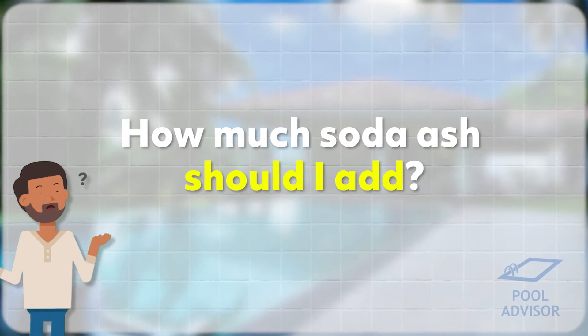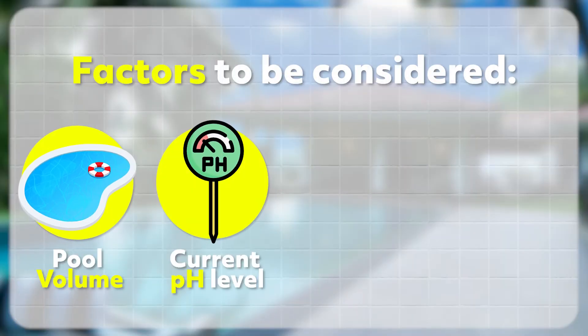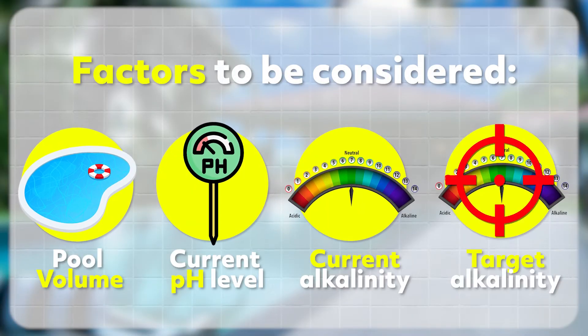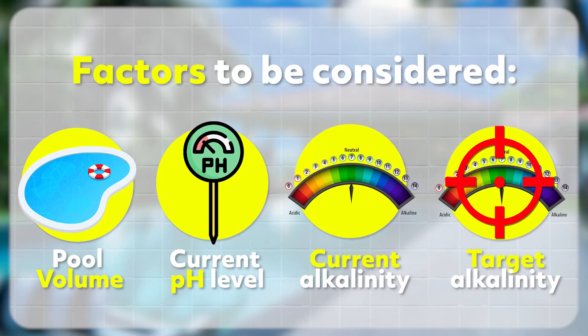So if you've decided you're going to use soda ash, how much should you add? The amount depends on a few different factors such as pool volume, your current pH, your current alkalinity, and the target alkalinity that you want to reach by the time you've finished adding the soda ash.